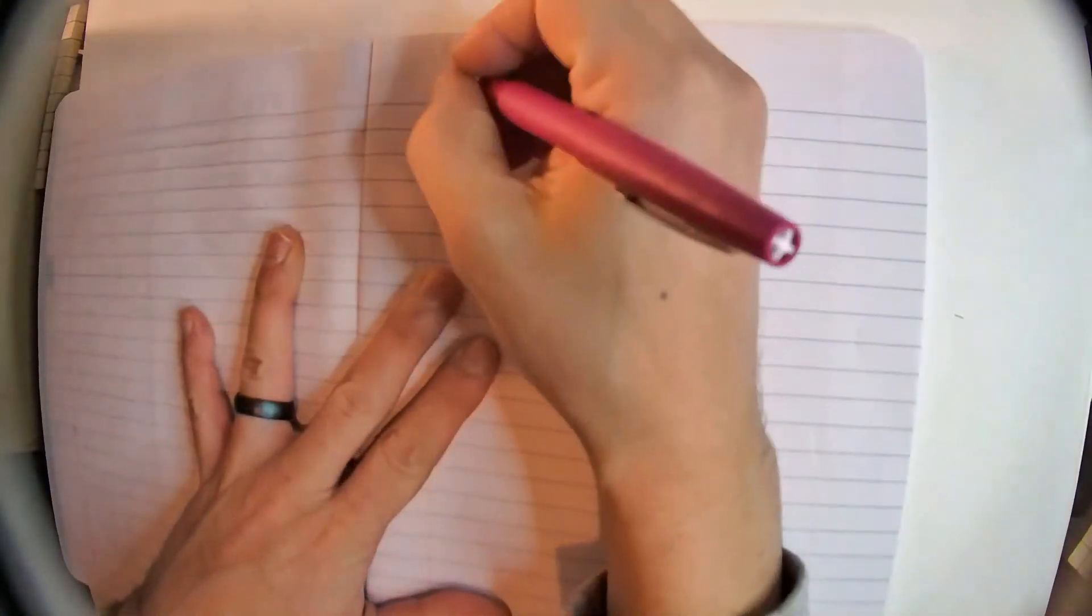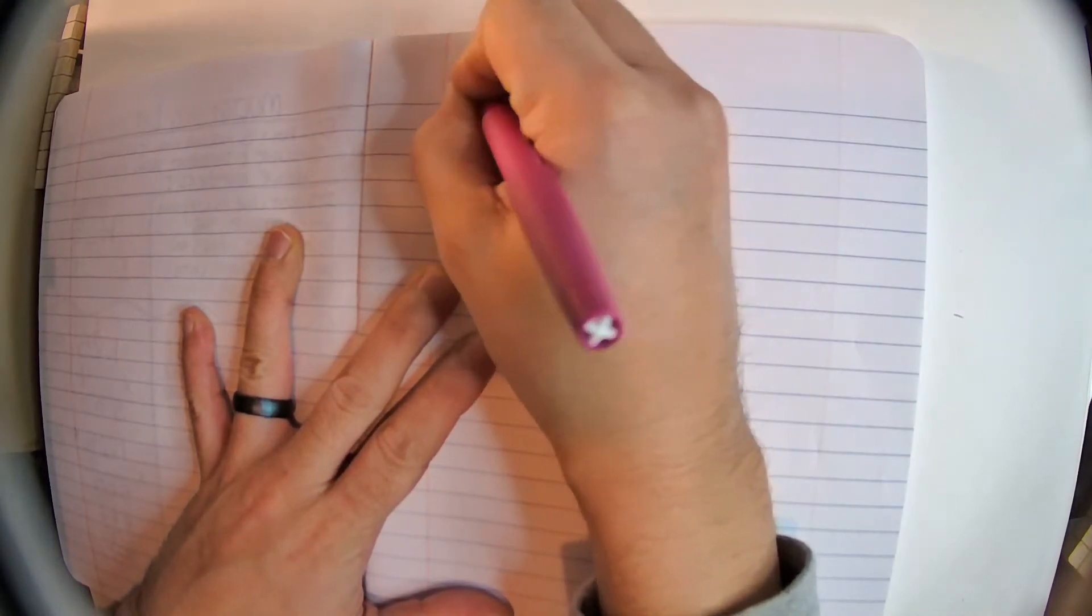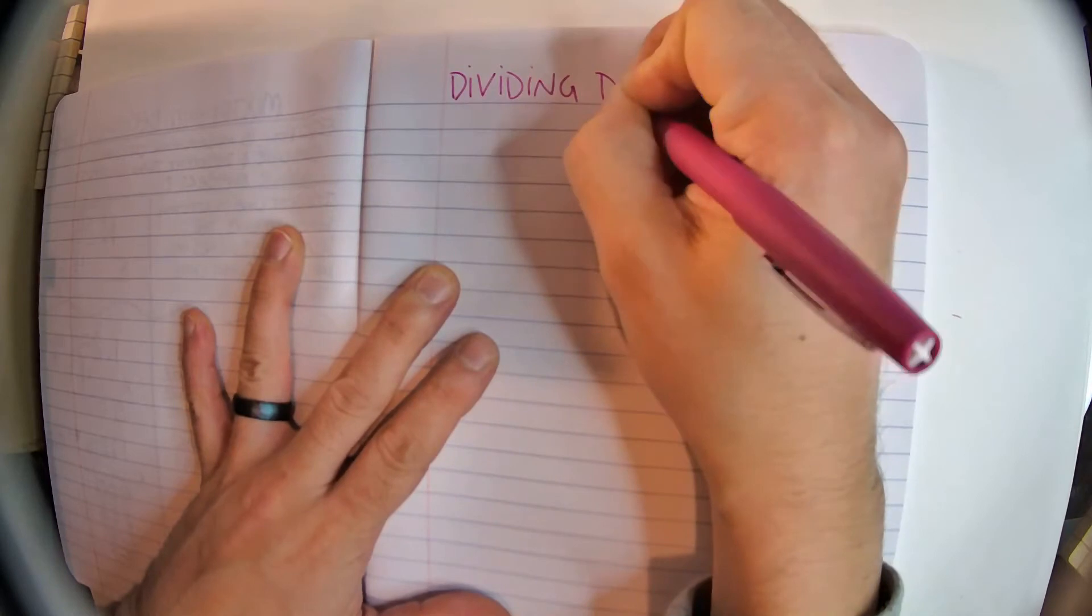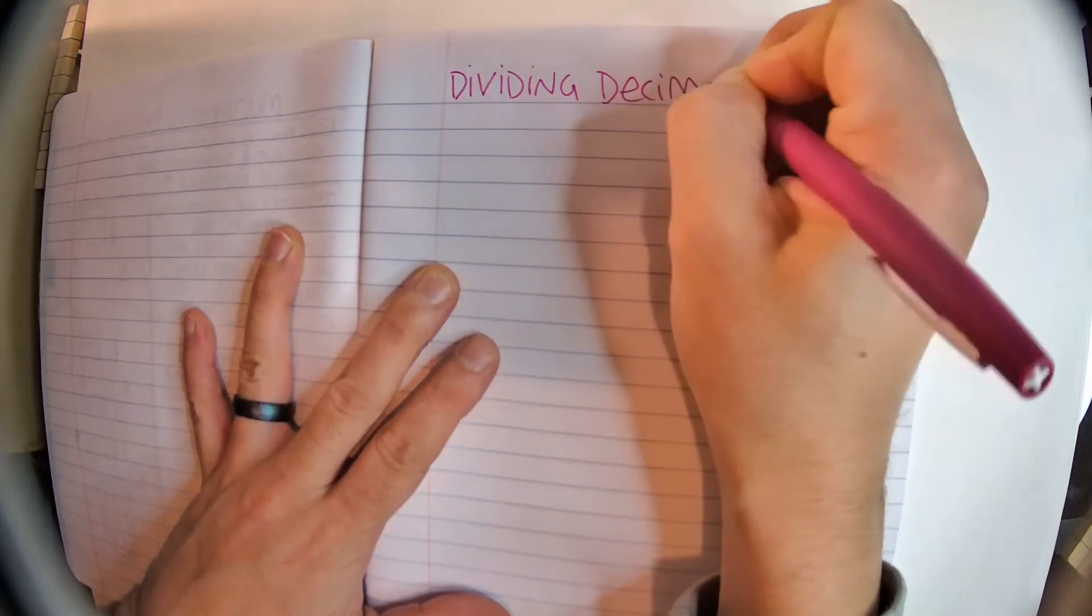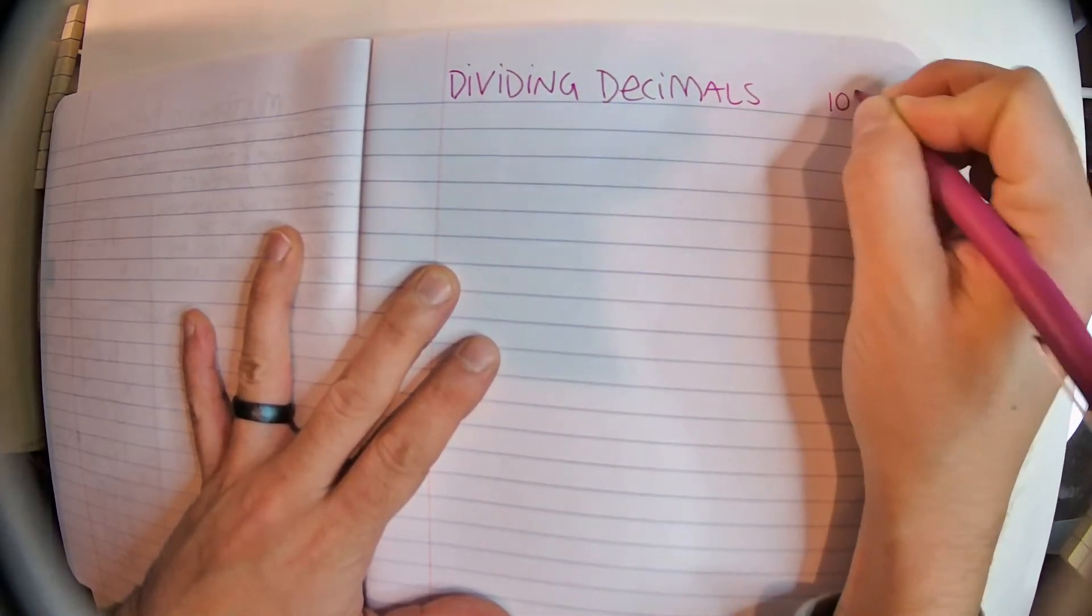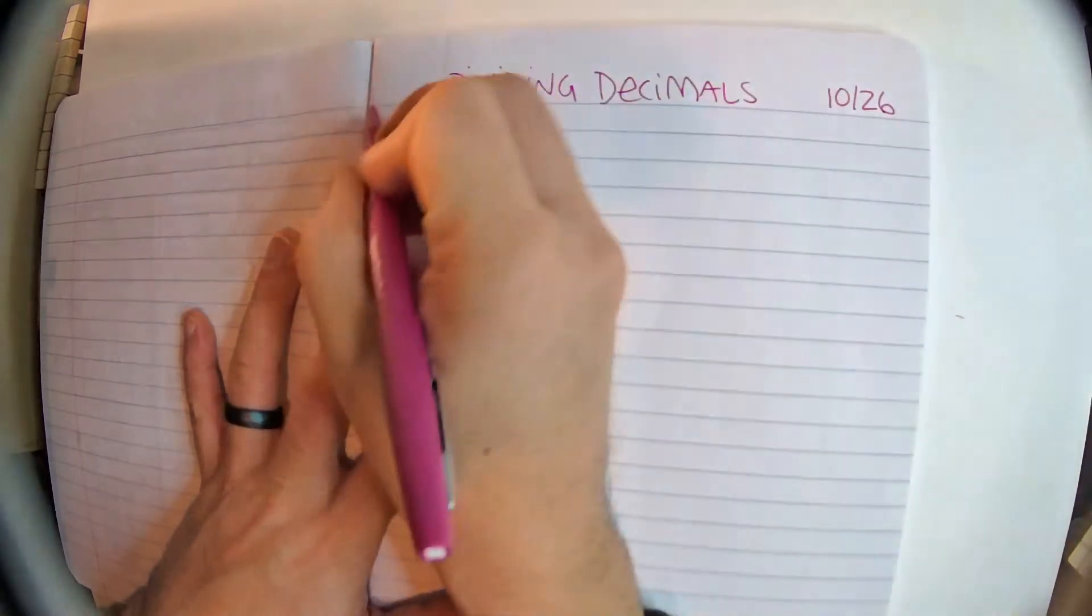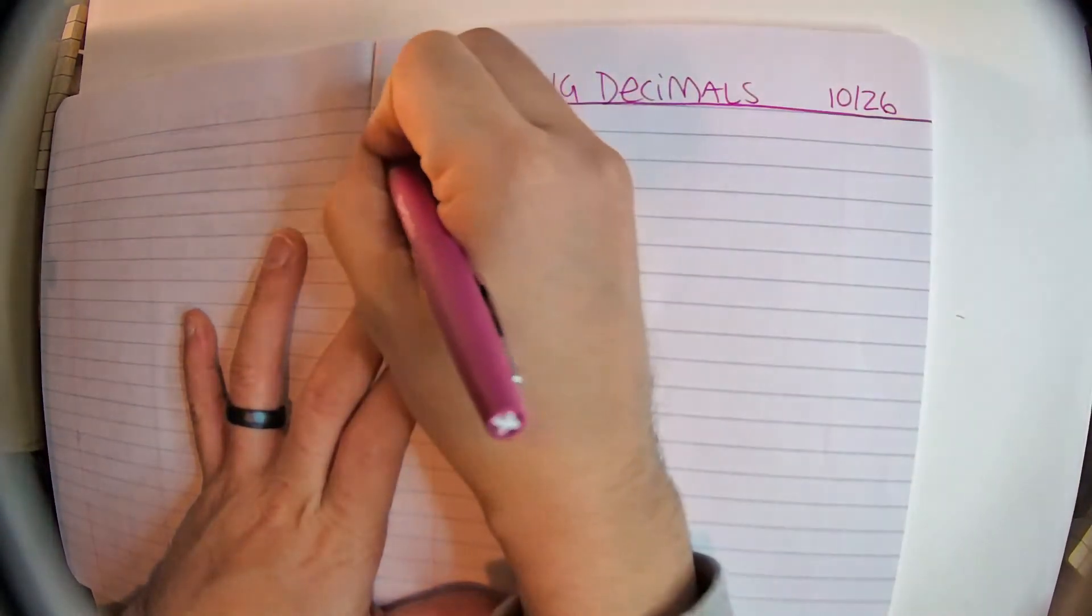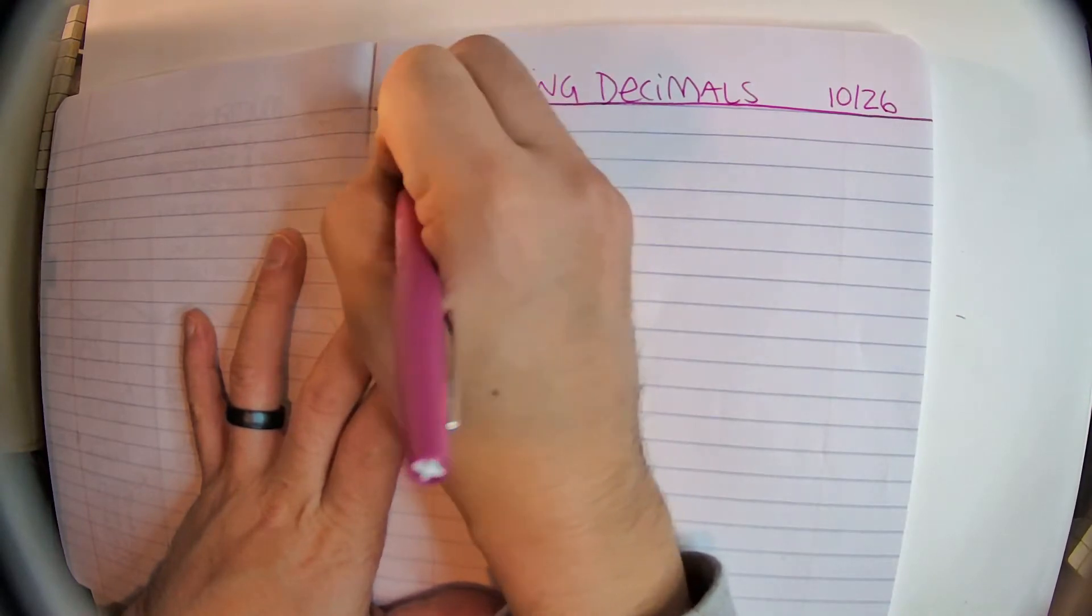And yes, we have arrived at our destination. Today's new note page: Dividing decimals. The date, that's the 26th. And then we're going to draw a line. And then we're going to put our essential question.